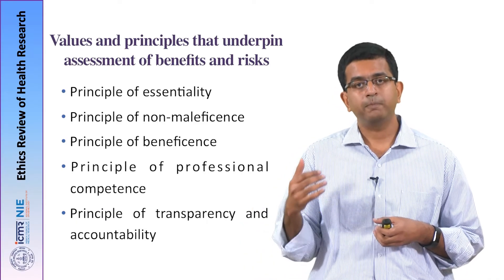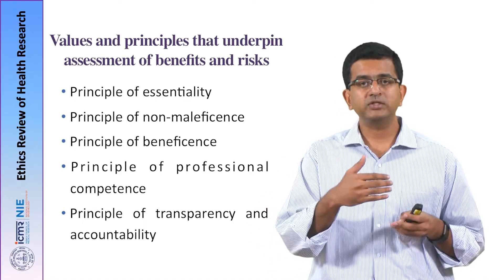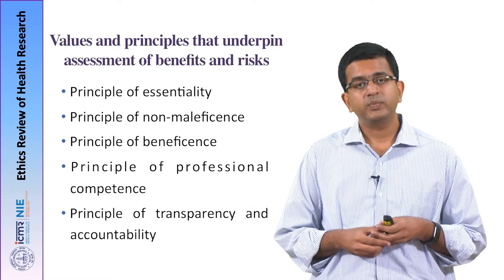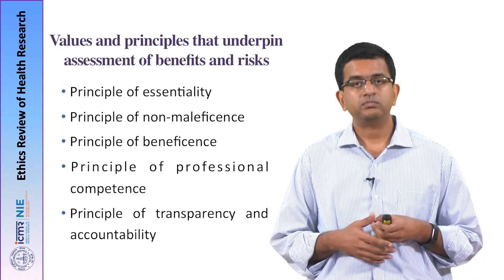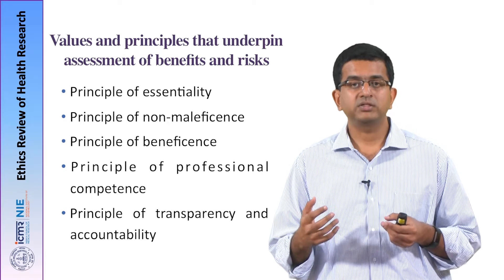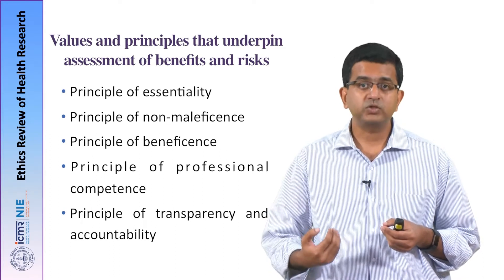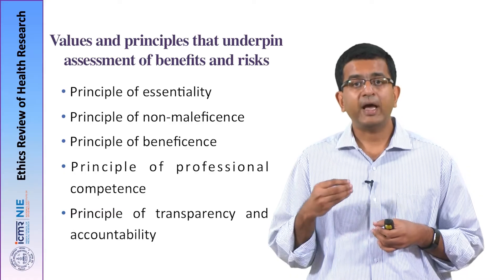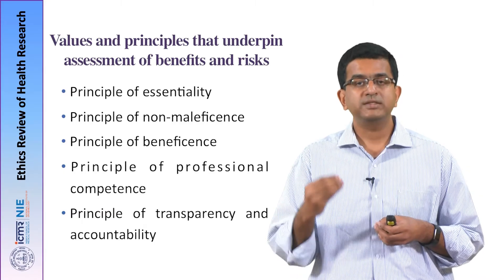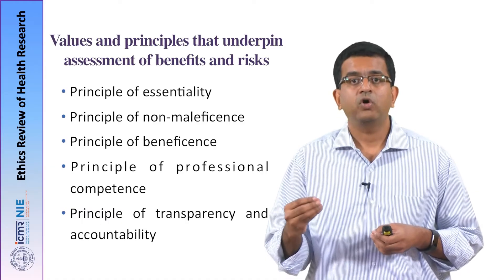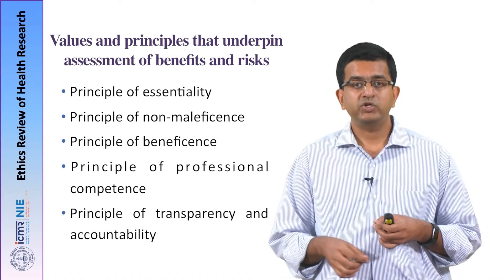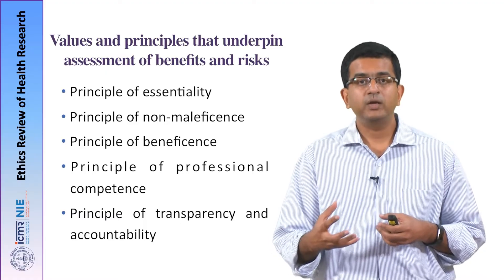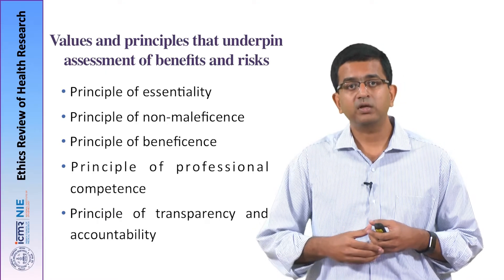Finally, there is the principle of transparency and accountability, which runs across several aspects of research ethics. In order for risks and benefits to be balanced — benefits maximized and risks minimized — the entire research project has to be transparent. The researcher should act in a spirit of accountability towards the safety, welfare, and benefits of the research participant. If that is ensured, then risks and benefit balance will happen. These five or six principles are the underlying principles behind risk and benefit assessment in a research project.